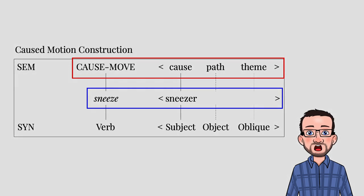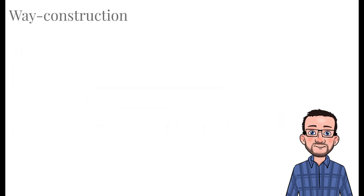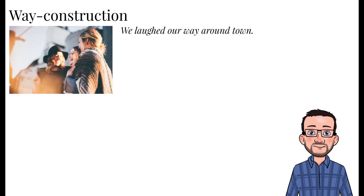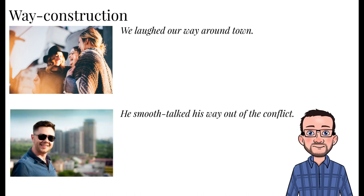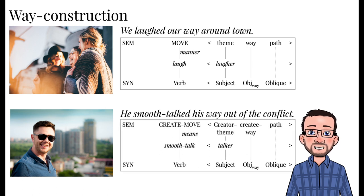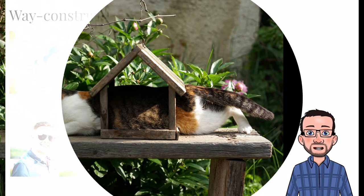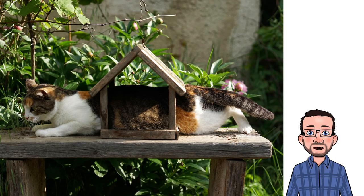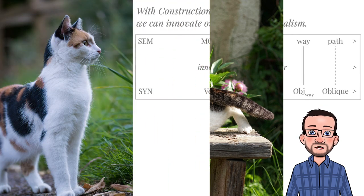Not all argument structure constructions are quite as schematic and abstract as the caused motion construction or the ditransitive construction. Some of them are only partially schematic, such as the way construction. Examples of this construction in action are We laughed our way around town, in which we again see an intransitive verb used in an unusual pattern, or He smooth-talked his way out of the conflict. This construction typically expresses two abstract meanings: the first is to express the manner of movement, where you can just picture people walking around town while they are laughing; the second meaning is the creation of a path out of something, where the subject finds himself in a difficult situation but uses charm and smooth-talking as a means to escape. With the title of this video, Innovating our way out of lexicalism, I therefore use the way construction to imply that mainstream linguistics is finding itself stuck because of the limitations of lexicalist theories, and that the innovations of construction grammar have created a means to get unstuck and move our field forward.